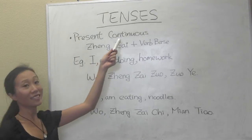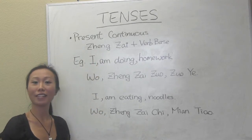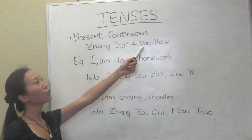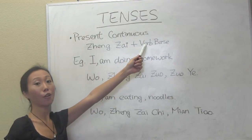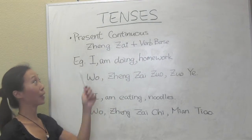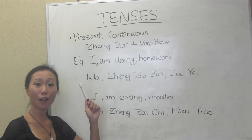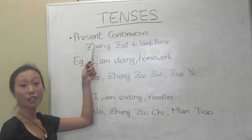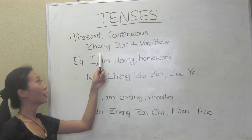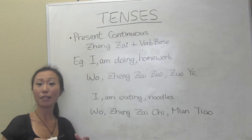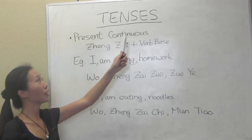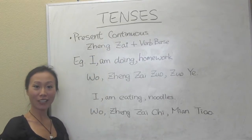Now let's look at the present continuous tense. In Chinese, the present continuous tense still uses the verb base, but we add the word 正在 to make it continuous. 正在 means 'in the process of doing something,' so we use this to imply the continuous tense.